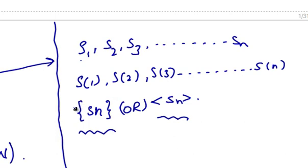The image of S of n or S(n) of a positive integer n is called the nth term of the sequence Sn. And here S1, S2, S3 are the first term, second term and third term respectively.